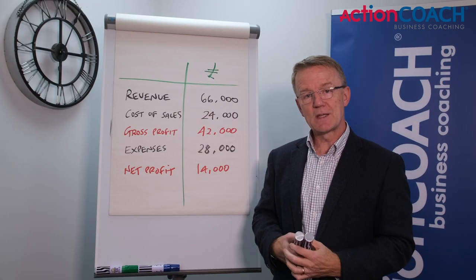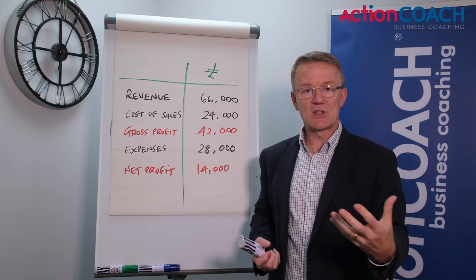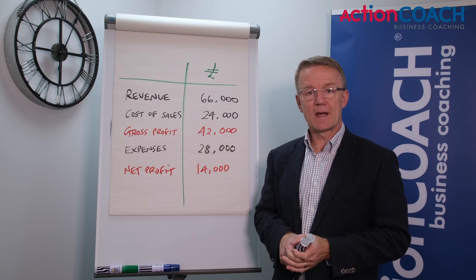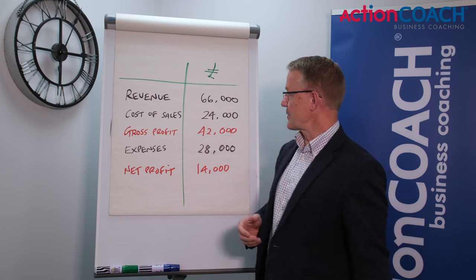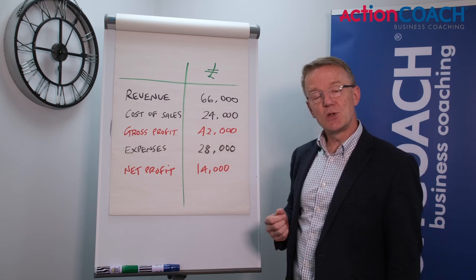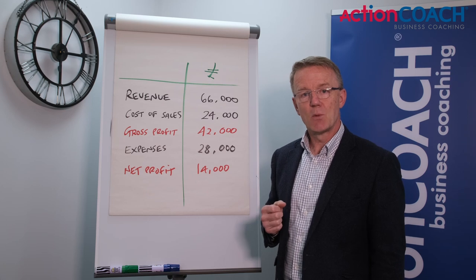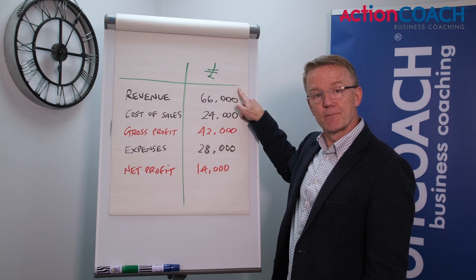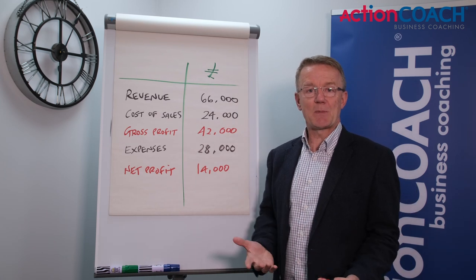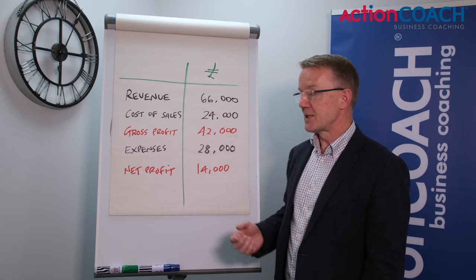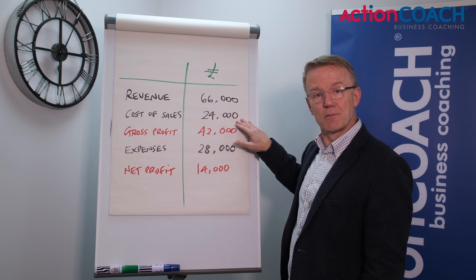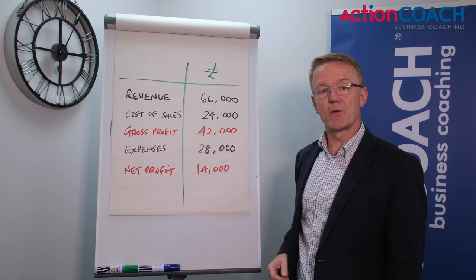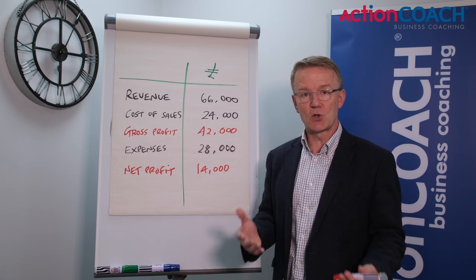Now the important thing about these numbers is not just that you know where to find them in Sage, QuickBooks, or Xero, but that they change your behaviour as a business owner. You'd start to think about which direction you want these numbers to move in. What can I do with my marketing and sales to make the revenue go up? What can I do — maybe get a special deal with my suppliers — to make the cost of sales go down? Because if revenue goes up and cost of sales goes down, your gross profit is going to be higher, and that's a good thing in business.